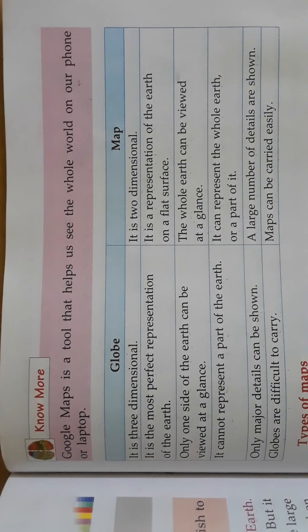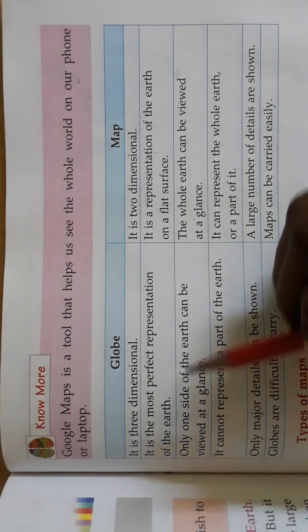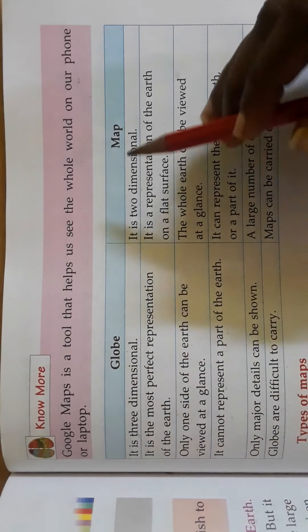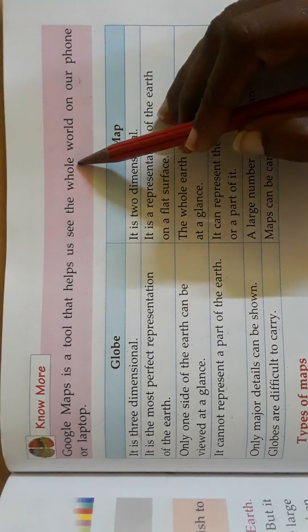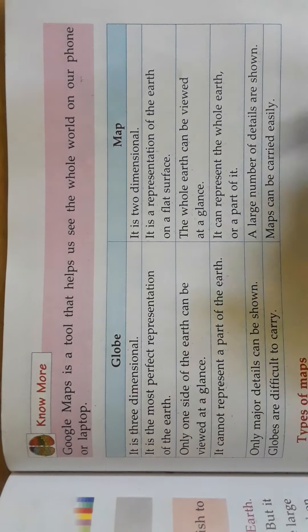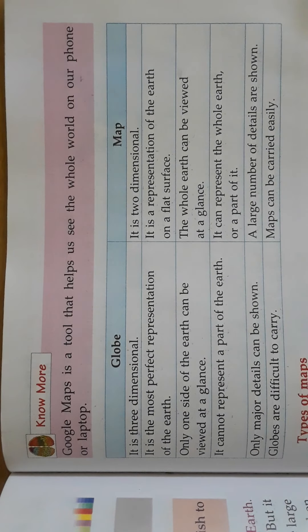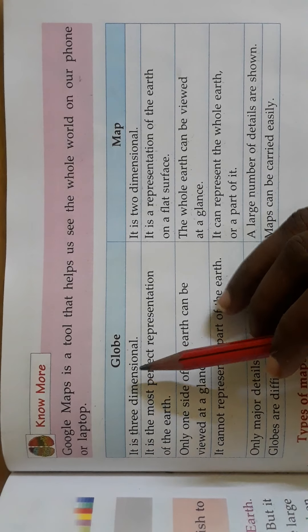Hi children, in this class we are going to know about differences between globe and maps. A globe is a tool that helps us see the whole world, and we can also view it on our phone or laptop using maps.